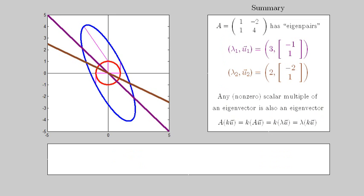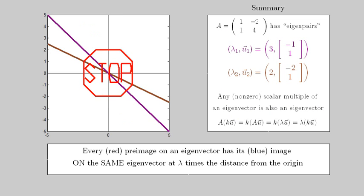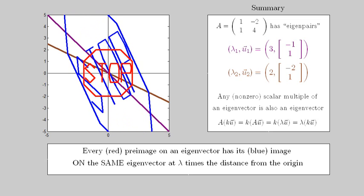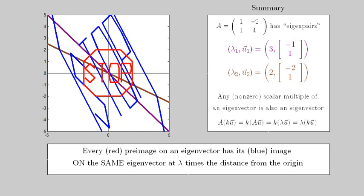For another illustration, take the pre-image to be the red stop sign. Under the transformation given by matrix A, each point on either the brown or purple lines, the eigenvectors, has its image remain on that line. Not only so, but the scalar distance from the origin will correspond to the eigenvalue, in this case either 3 or 2.